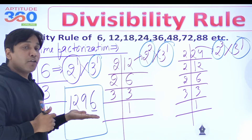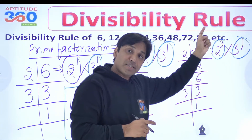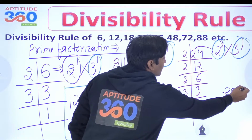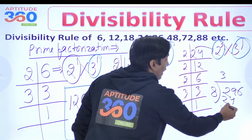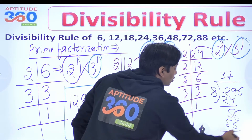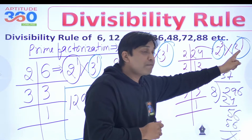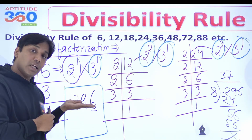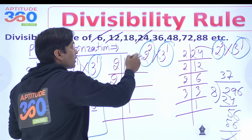Now is this number a multiple of 8? You will have to check the last three digits, which is 296. Is 296 divisible by 8? 8 times 37 is 296 — so 56... yes, the last three digits are completely divisible by 8. And the sum of digits is divisible by 3. Hence I can say this number is going to be divisible by 24 also. So you get the divisibility rule of 6, 12, and 24.